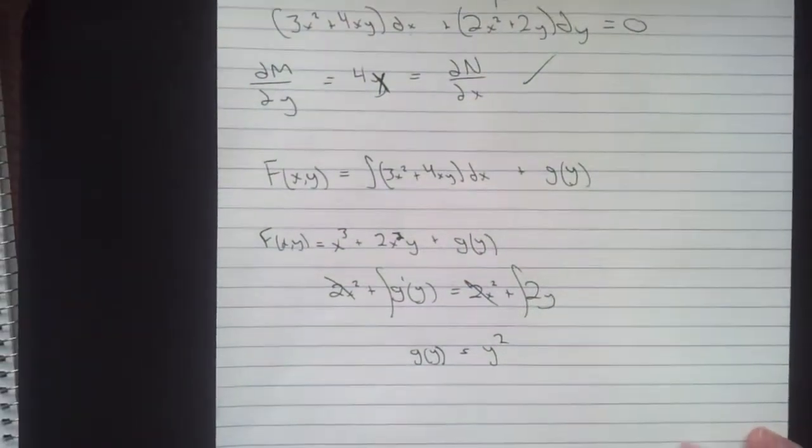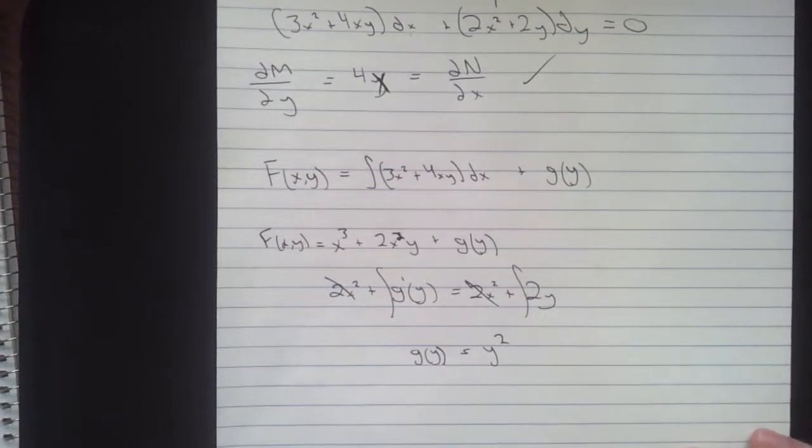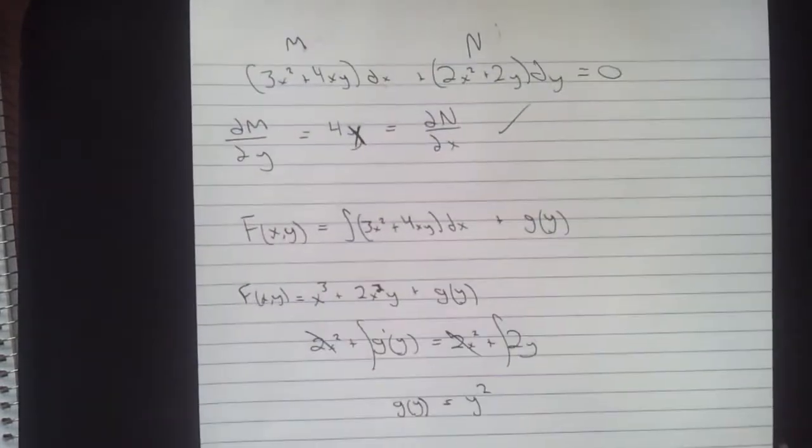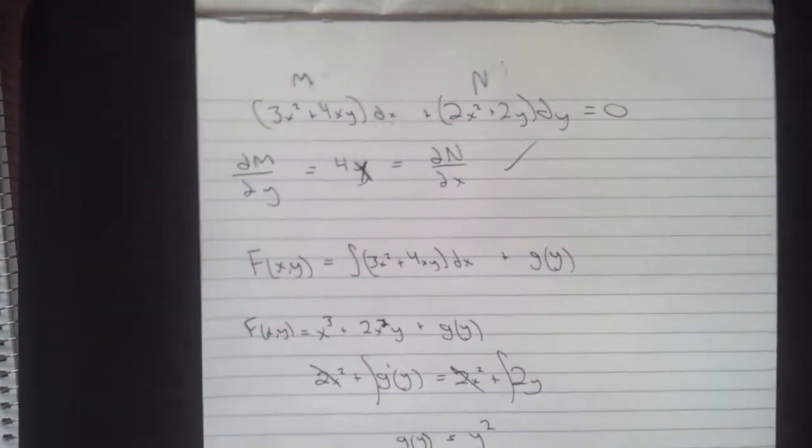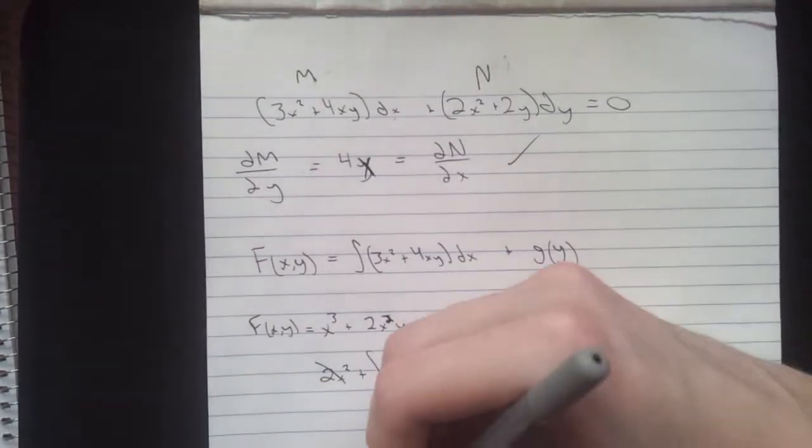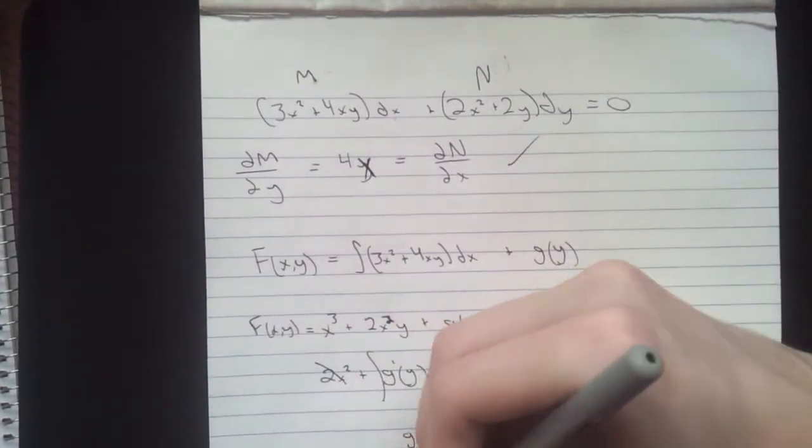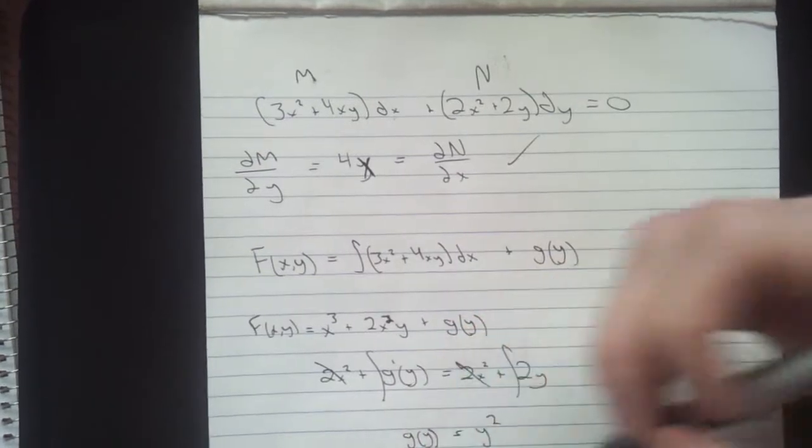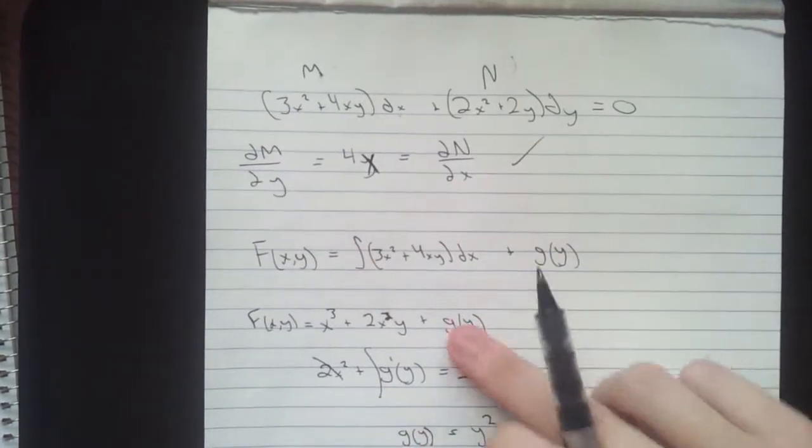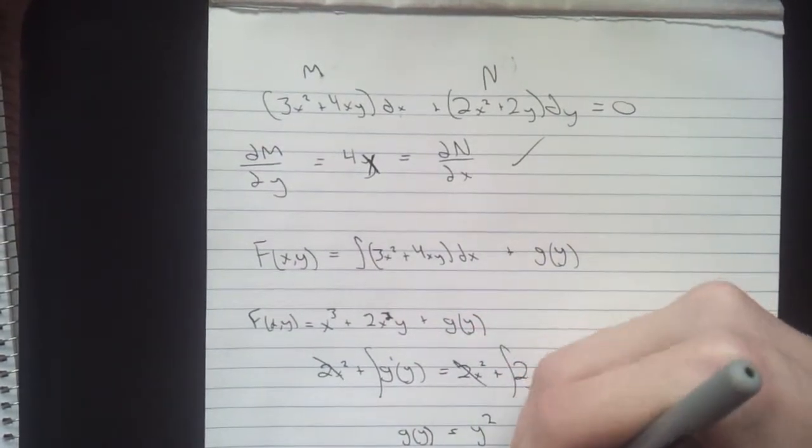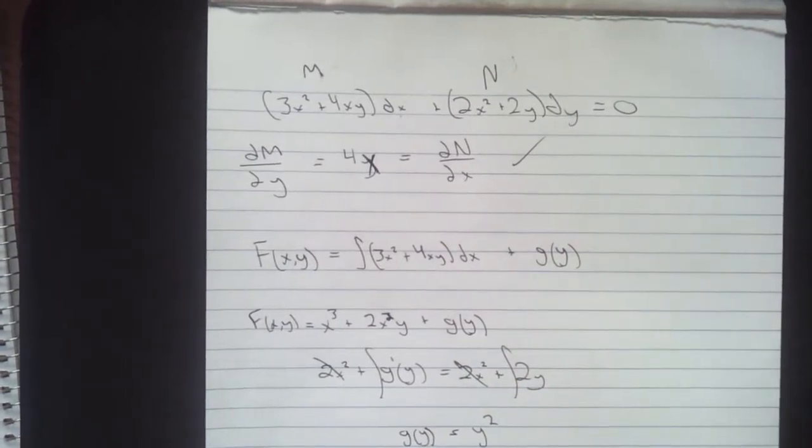And now we're pretty much done. So remember our solution is our original integral of M dx. So that's this one right here. The final solution is x cubed plus 2x squared y plus, or g of y here, y squared equals c. That's all there is to it.